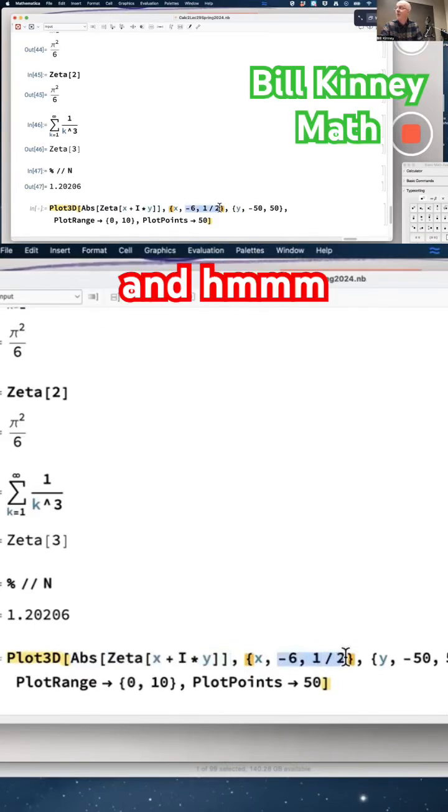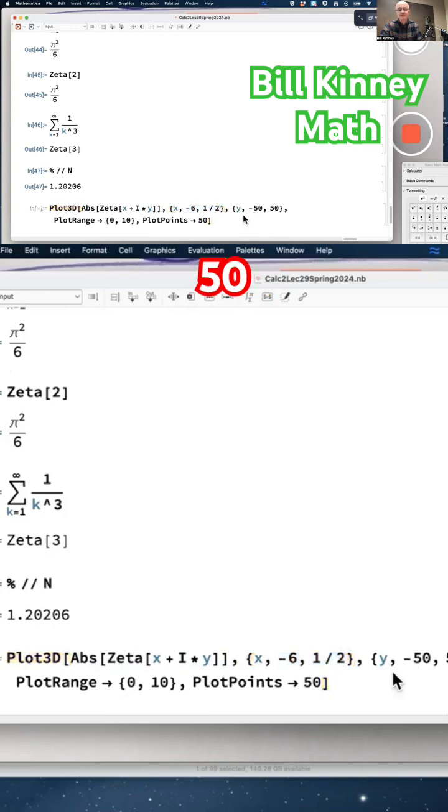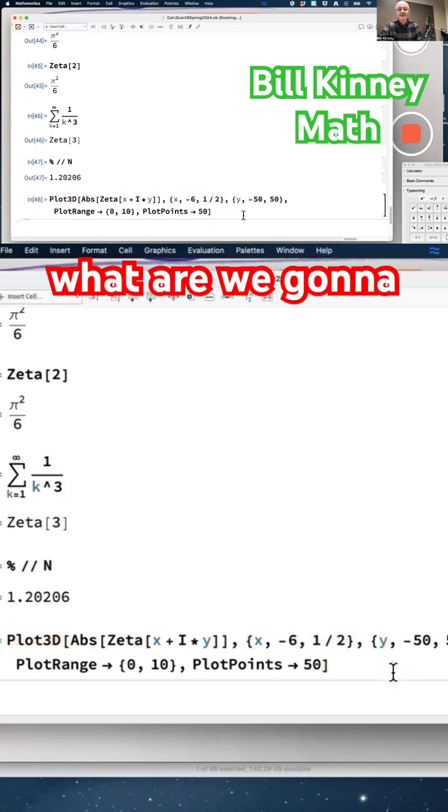X going between negative six and one half, and Y going from negative 50 to 50. What are we going to see?